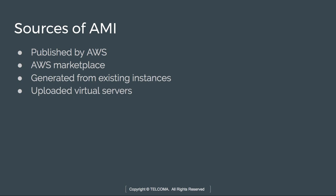AMIs can also be generated from existing Amazon EC2 instances — the instance is configured to meet all customer standards for updates, management, security, etc. Finally, uploaded virtual servers allow virtual machine import and export; you can create images from various virtualization formats such as RAW, VHD, VMDK, OVA, etc. These are the sources of Amazon Machine Images, which define the initial software that will be on an instance when it is launched.